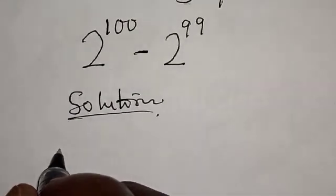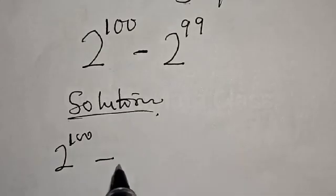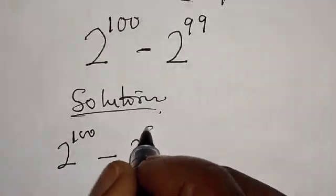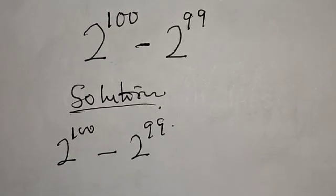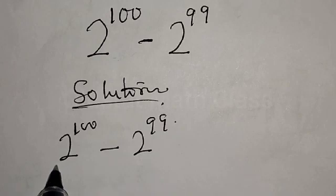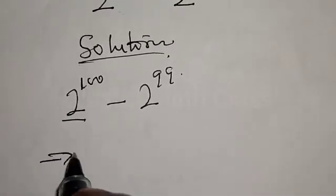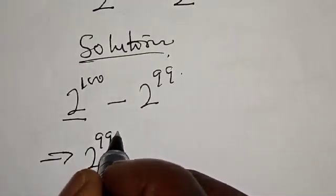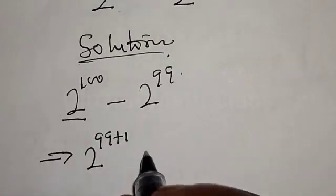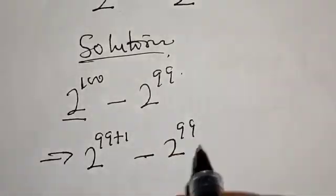We have 2 raised to power 100 minus 2 raised to power 99. We know that 100 minus 99 is equal to 1. Therefore, let's look at how we can manipulate this. This implies that 100 can be written as 99 plus 1, so we have 2 raised to power 99 plus 1, then minus 2 raised to power 99.